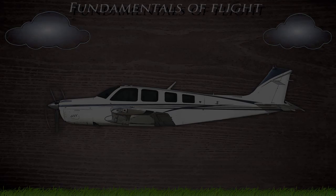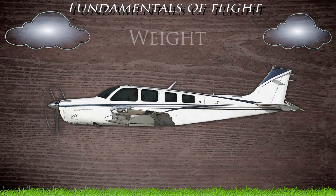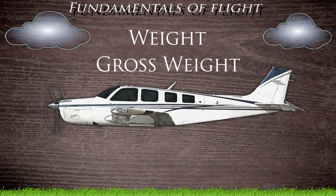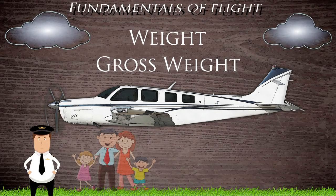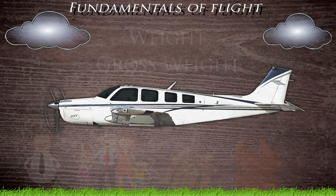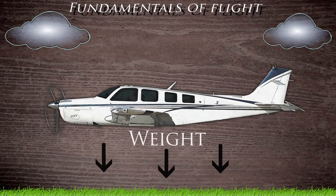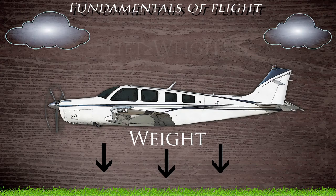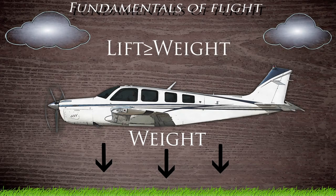Now for the forces trying to prevent flight. Weight — or more commonly referred to as gross weight — which includes the aircraft, pilot, passengers, baggage, and fuel, are all working against lift. With weight pulling the aircraft down, it is important to know that lift generated by the airfoil must be equal to or exceed the gross weight of the aircraft.